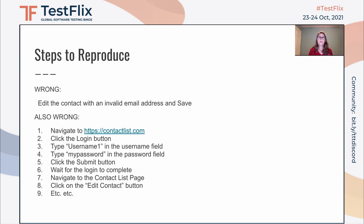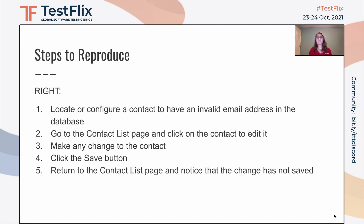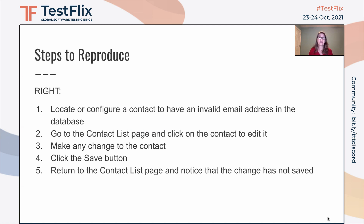The developer probably knows how to log into the application. It's fine to include login details like username and password, but you don't need to tell the developer how to log in. So this is better: 'Locate or configure a contact to have an invalid email address in the database. Go to the contact list page and click on the contact to edit it. Make any change to the contact. Click the save button. Then return to the contact list page and notice that the change has not saved.' Very clear, very concise.